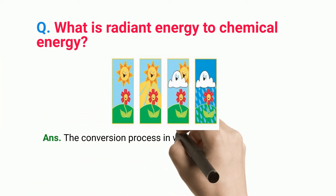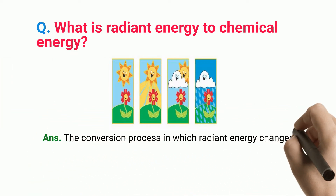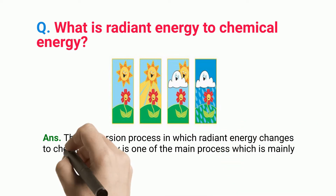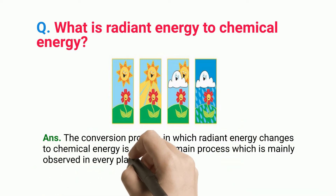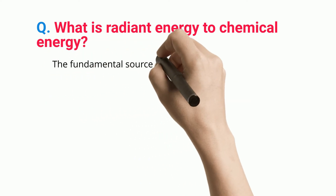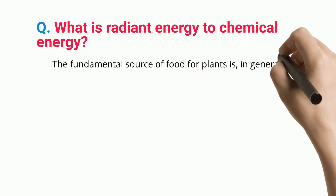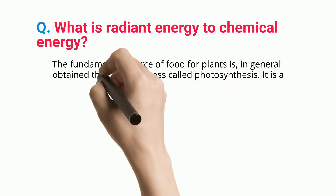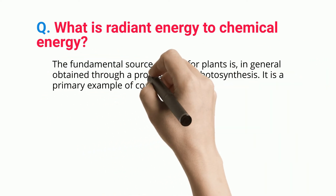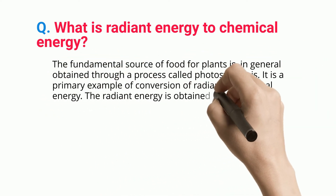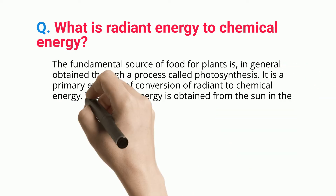The conversion process in which radiant energy changes to chemical energy is one of the main processes mainly observed in plants for their survival. The fundamental source of food for plants is, in general, obtained through a process called photosynthesis. It is a primary example of conversion of radiant to chemical energy.